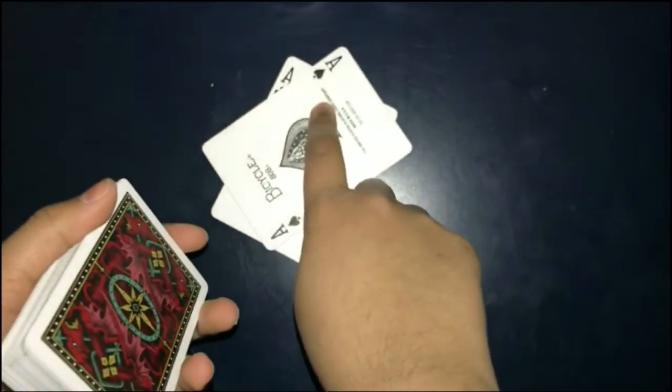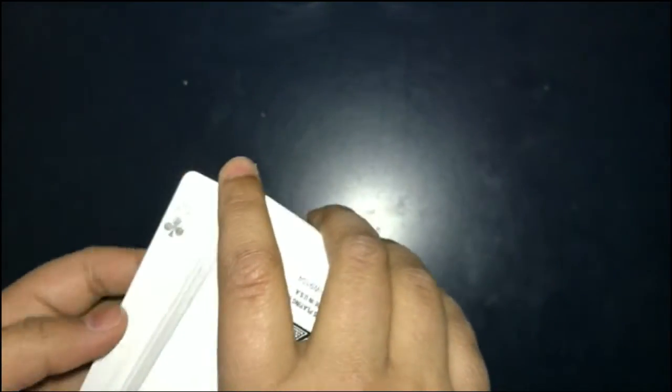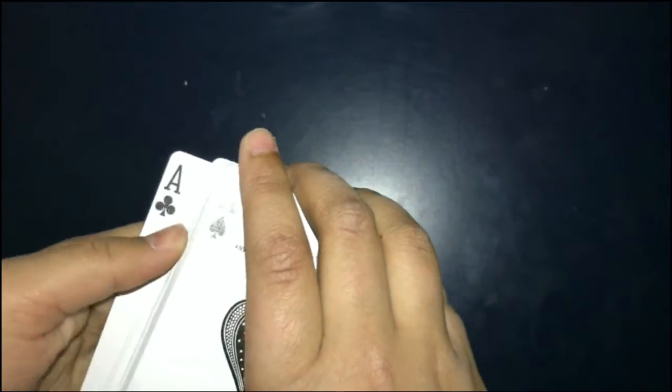You will know what their card is because it is the only one under the key card. Now you should have their card on the bottom and the two black aces on the table. Place one of the aces on top and one of the aces on the bottom. Put the cards in your left hand.